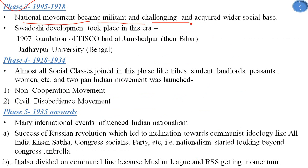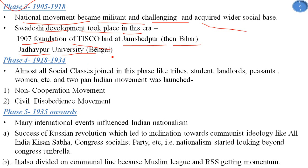In phase three, from 1905 to 1918, the nationalist movement became militant and challenging and acquired a wide social base. Several developments took place in this era, such as the foundation of TISCO laid in Jamshedpur in 1907, and Jadavpur University in Bengal was also opened.